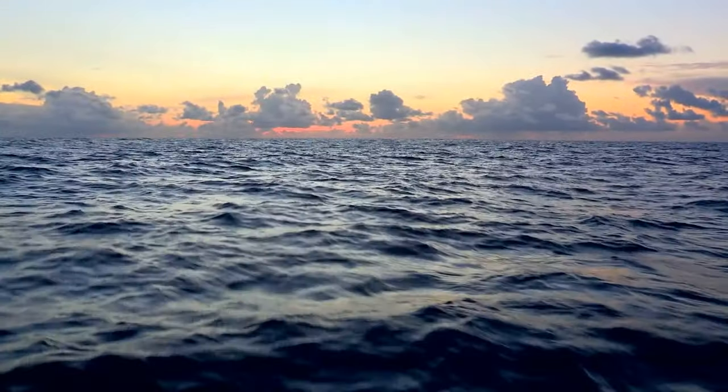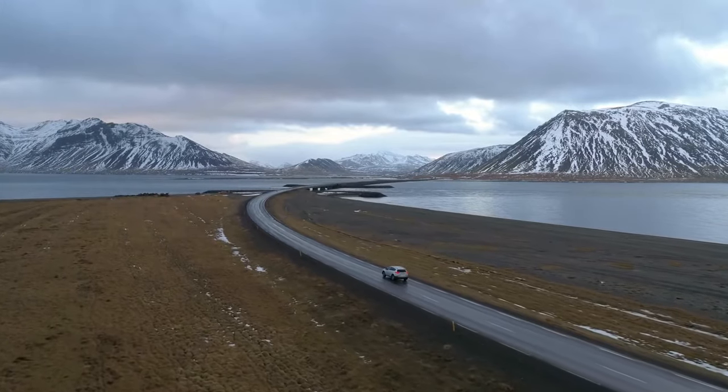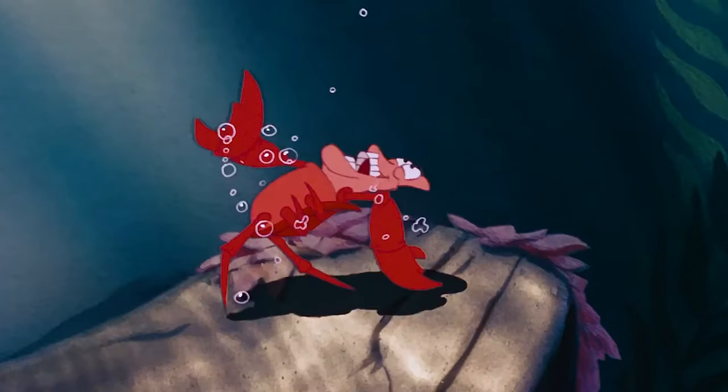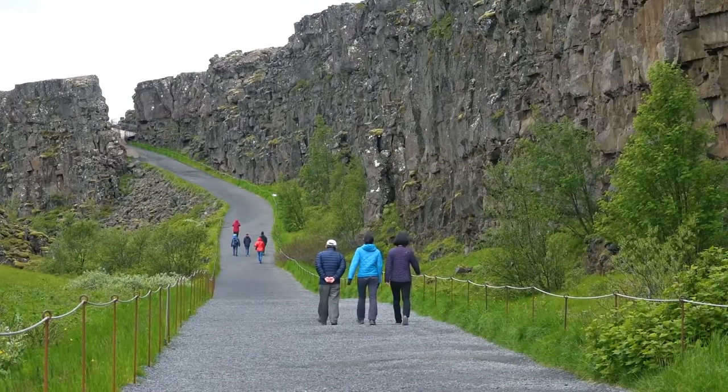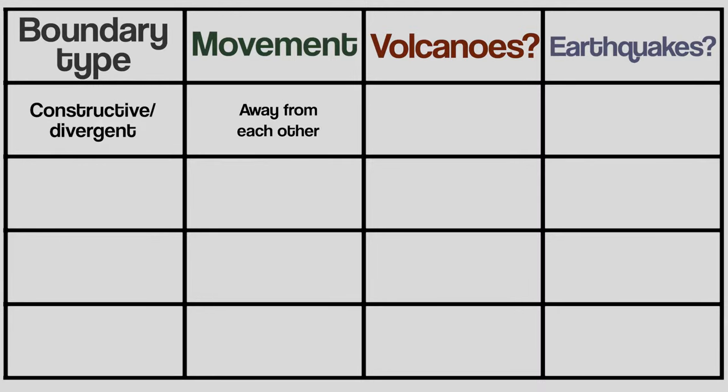These types of boundary mostly appear at the bottom of the sea. There are some places like Iceland where you can actually see evidence on land of the tectonic plates splitting apart. So what type of hazards do we find here and why?